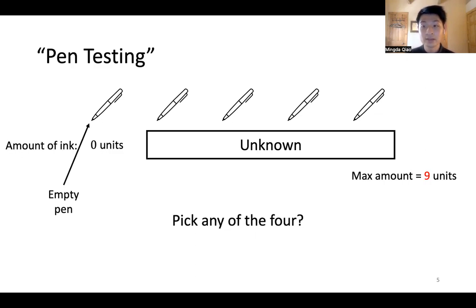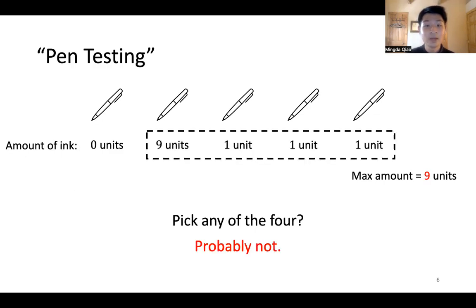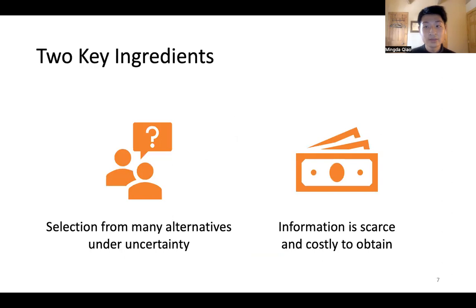Even though the four pens have already passed the test, it's not ideal to pick one of the pens randomly, because it might be that only one of the pens holds 9 units of ink, but the other three pens just barely passed the test and don't have much ink. We know that this problem has two important ingredients: we have to make a selection from many choices and we are uncertain about the quality of each option. Also, while we can obtain some information about each option, such information is very sparse and obtaining it has a very high cost in reducing the value of each option.